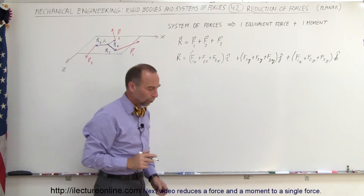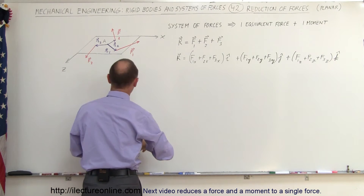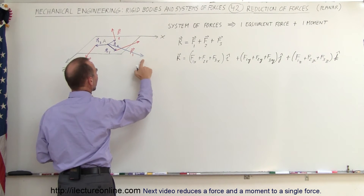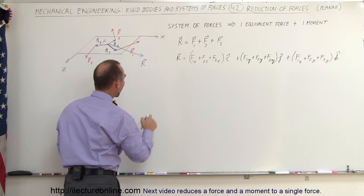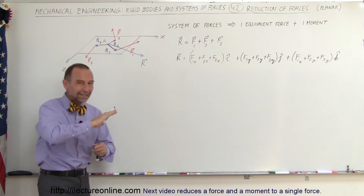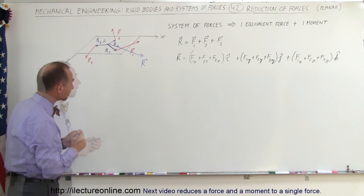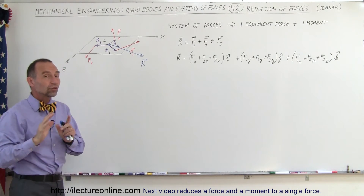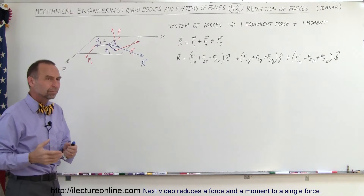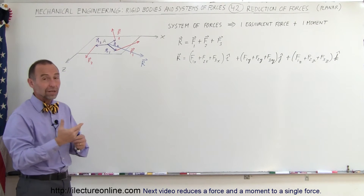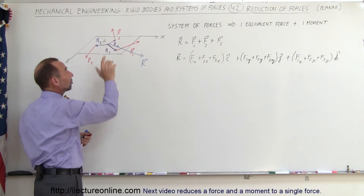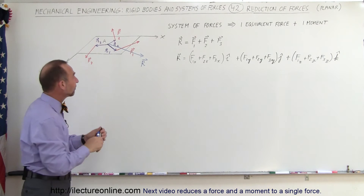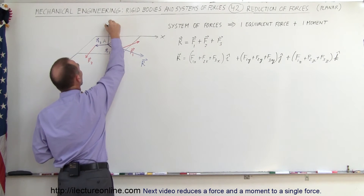That gives you the resultant force. Imagine this resultant force is acting at point A, and notice it is also in the X-Z plane. However, none of the original forces F1, F2, and F3 are actually acting at point A. Because these three forces cause a moment or torque about point A, we also have to account for that.